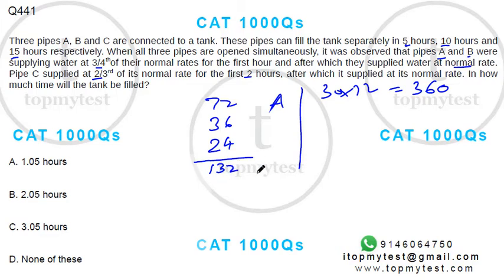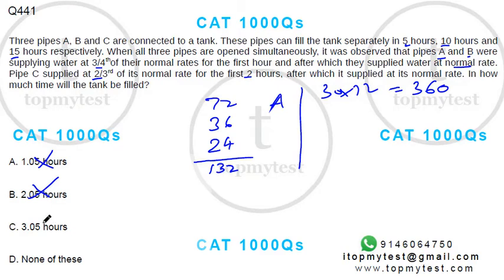At full capacity, 132 liters per hour would take roughly two and a half hours to fill 360 liters. Since the pipes are working at slightly less than full capacity, the answer cannot be less than 2.5 hours, so two of the answer options can be eliminated. The answer must be either 3.05 hours or none of these.